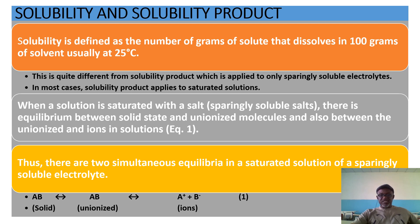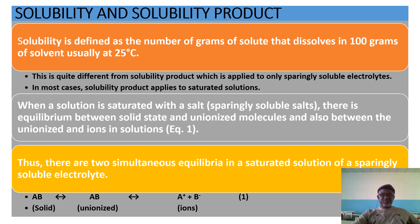Solubility is quite different from solubility product, which applies only to sparingly soluble electrolytes, and in most cases applies to saturated solutions. When a solution is saturated with a sparingly soluble salt, there is equilibrium between the solid state, the unionized molecules, and the ions in solution. Therefore there are two simultaneous equilibria. The first is solid AB, the unionized form, and then the ions — A+ and B− — are separated. For example, for sodium hydroxide: A represents sodium, B represents OH.